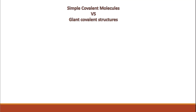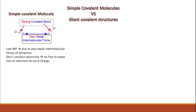The difference between simple covalent molecules and giant covalent structures: simple covalent molecules are small molecules with covalent bonding, like oxygen, carbon dioxide, and water. They have strong covalent bonds between the atoms within the molecules, but very weak intermolecular forces of attraction between the molecules.